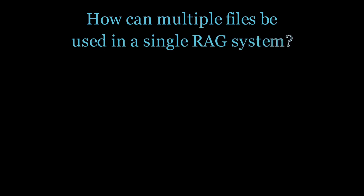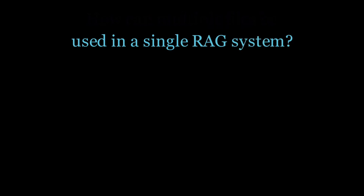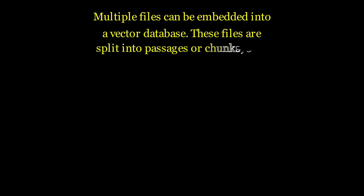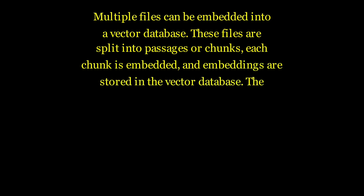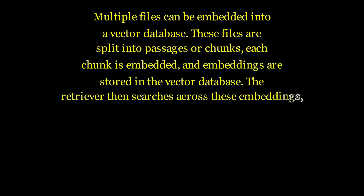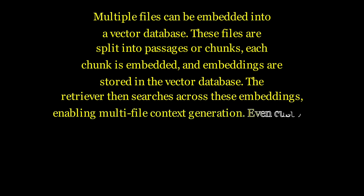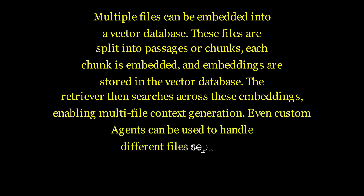How can multiple files be used in a single RAG system? Multiple files can be embedded into a vector database. These files are split into passages or chunks, each chunk is embedded, and the embeddings are stored in the vector database. The retriever then searches across these embeddings, enabling multi-file context generation. Custom agents can also be used to handle different files separately.